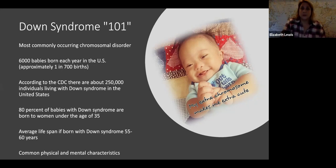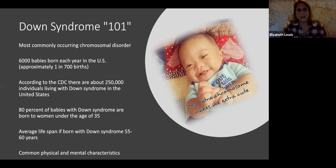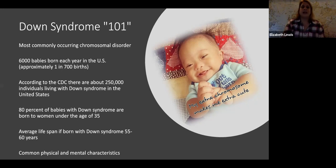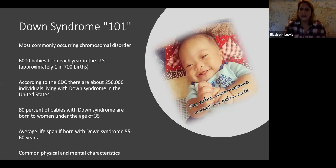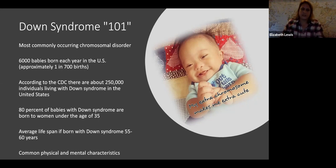Down syndrome is the most commonly occurring chromosomal disorder — about 1 in every 700 babies in the United States is born with Down syndrome, or about 6,000 babies a year. According to the CDC, there are about 250,000 individuals with Down syndrome living in the United States right now. A common misconception is that the older the mother, the more likely the chance of that child having Down syndrome, but in fact 80% of babies with Down syndrome are born to women under the age of 35.